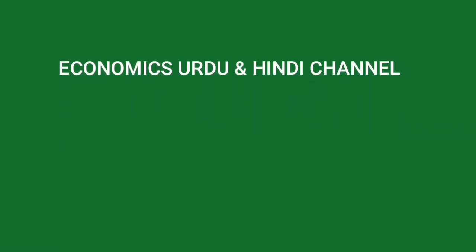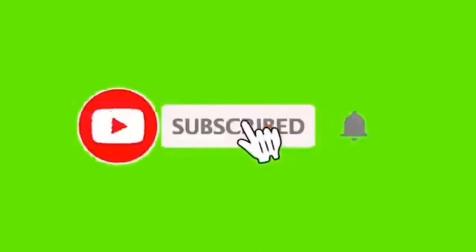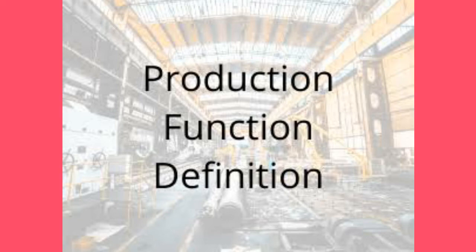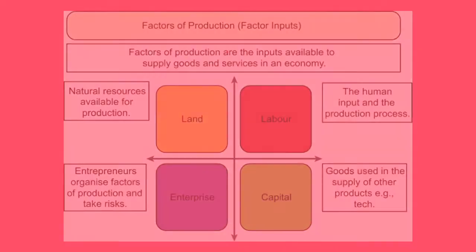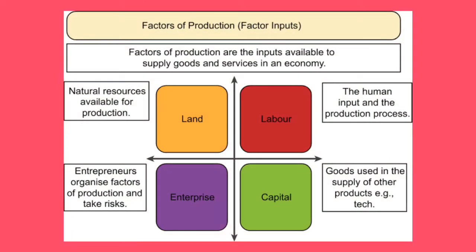Welcome to Economics Channel. Production function 2 marks answer. According to Stigler, one of the economists, production function is defined as the relationship between input and output of the production services, and the rate of output of the product.